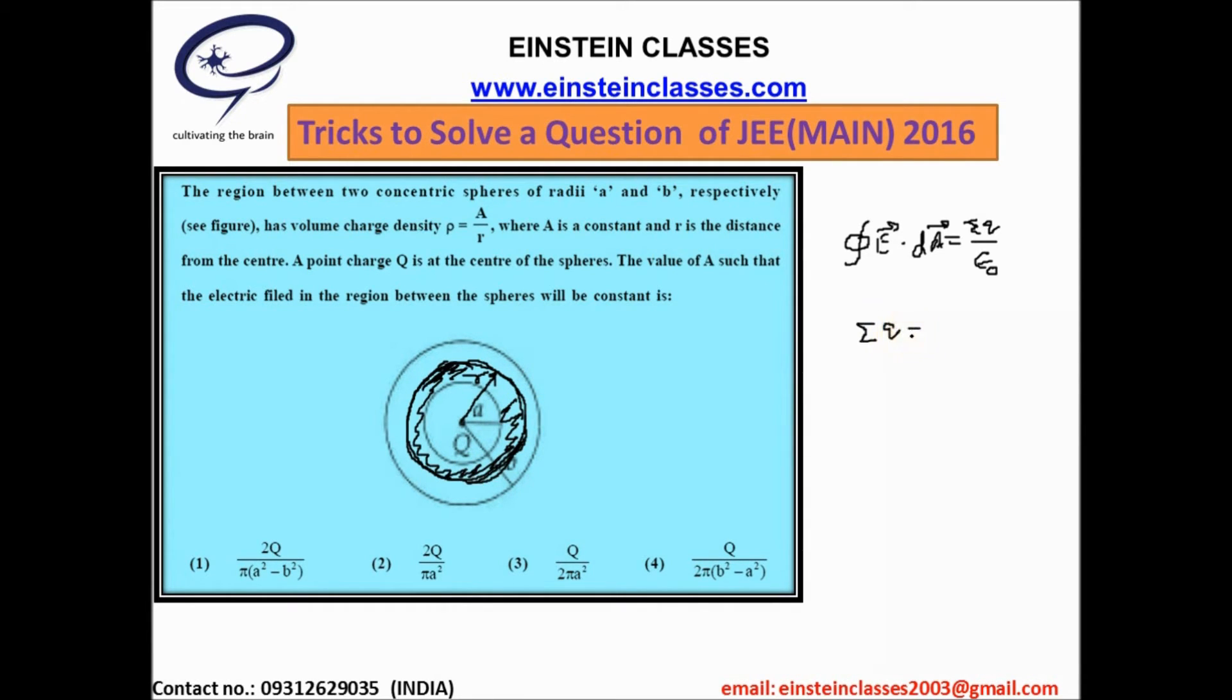This total charge comes out to Q plus integral over rho, the volume charge density, into 4 pi r square into dr, integrated from a to r. From this above discussion we can observe a point: the